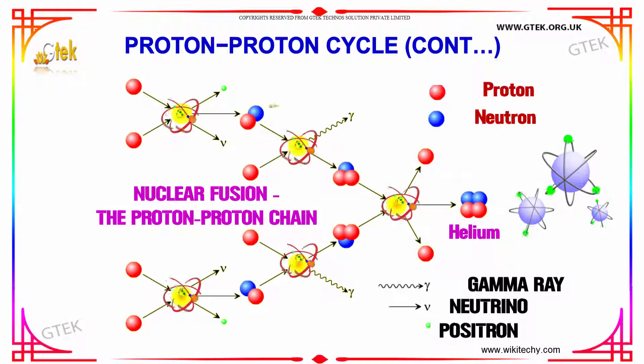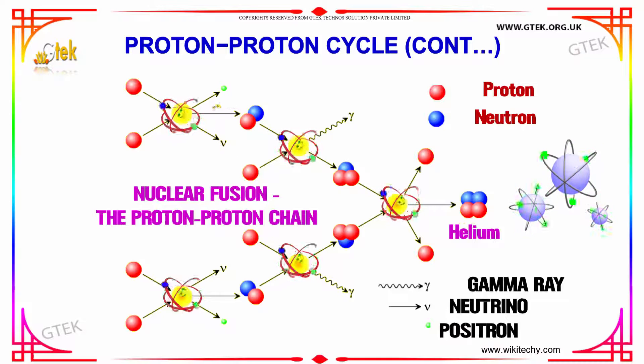This is a nuclear fusion of your proton-proton chain. Here, you are able to see the gamma rays and this is your positron. Here is your positron, here is your positron, and here is your neutrino.